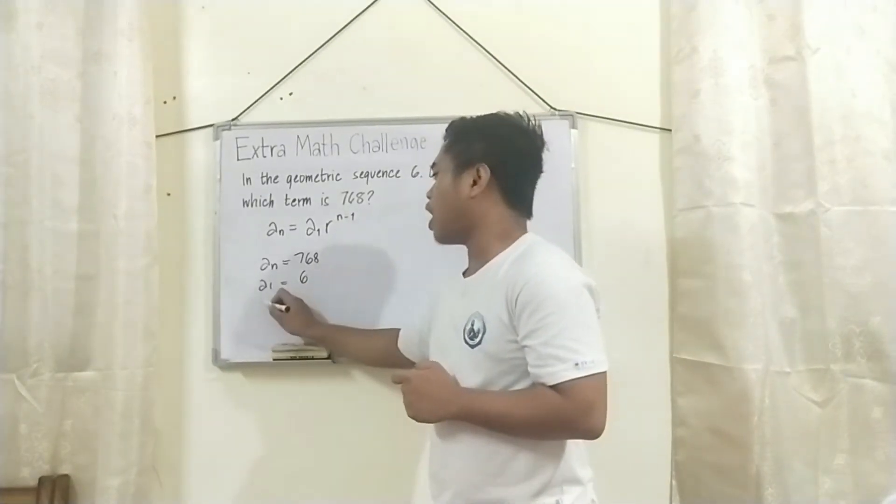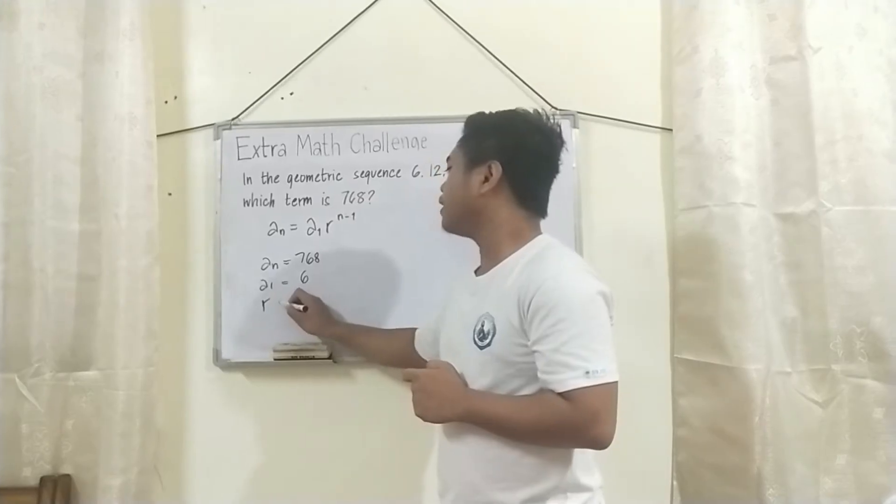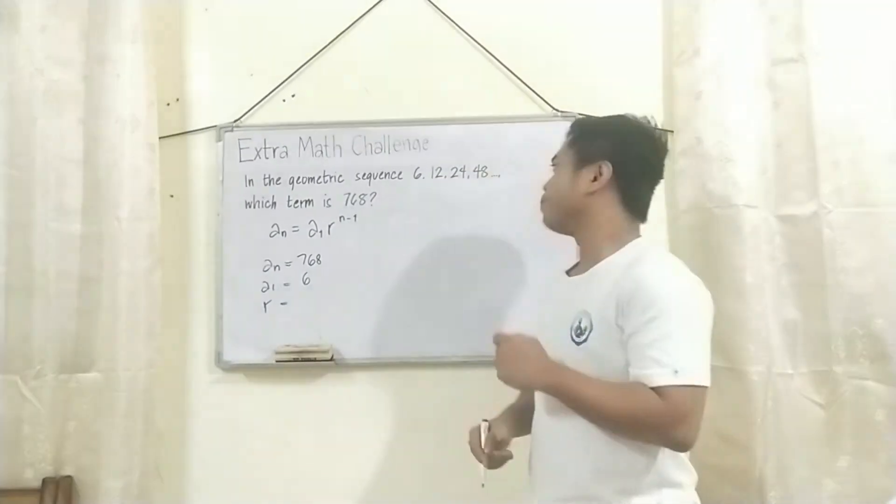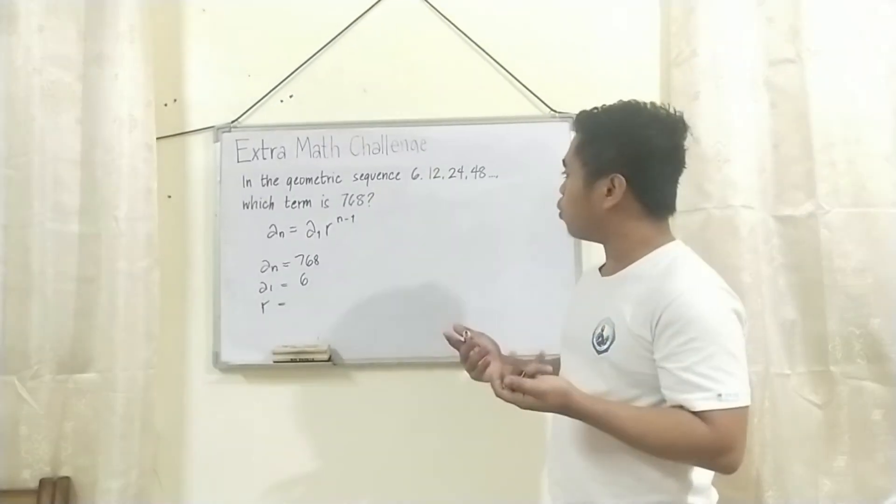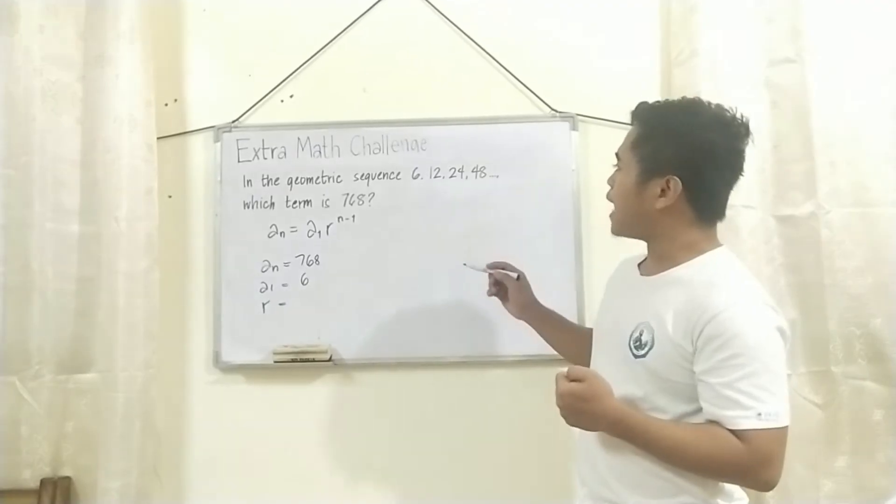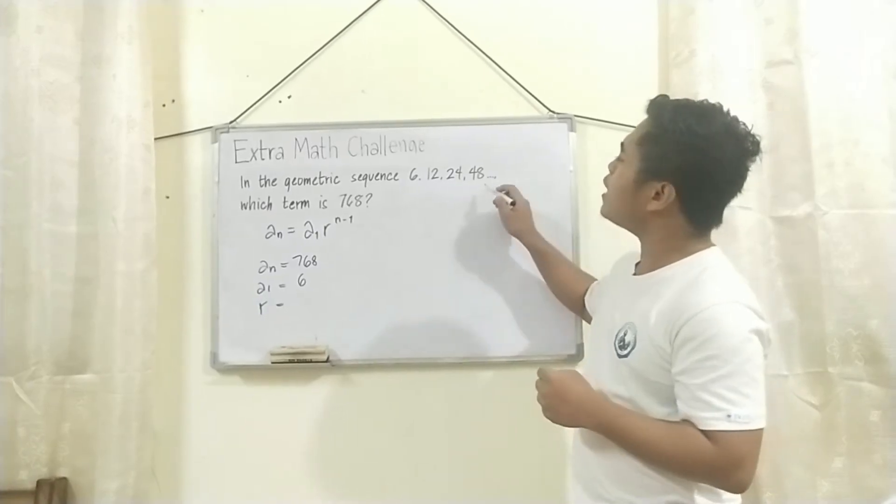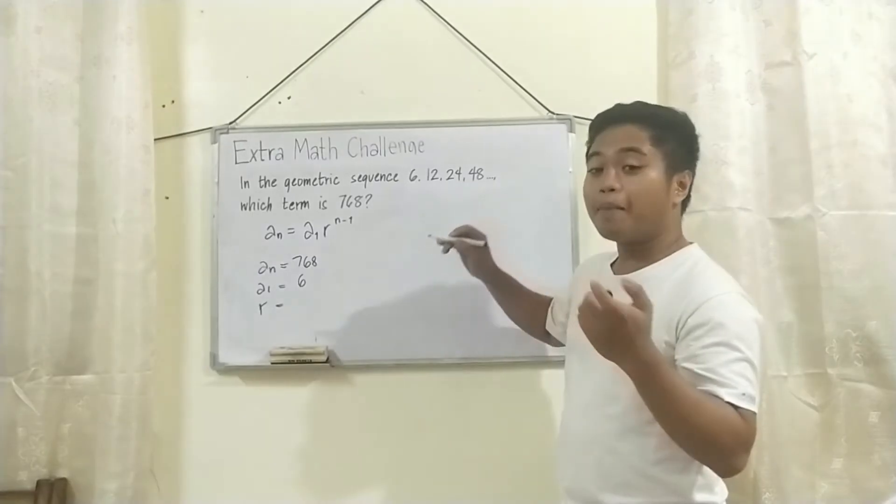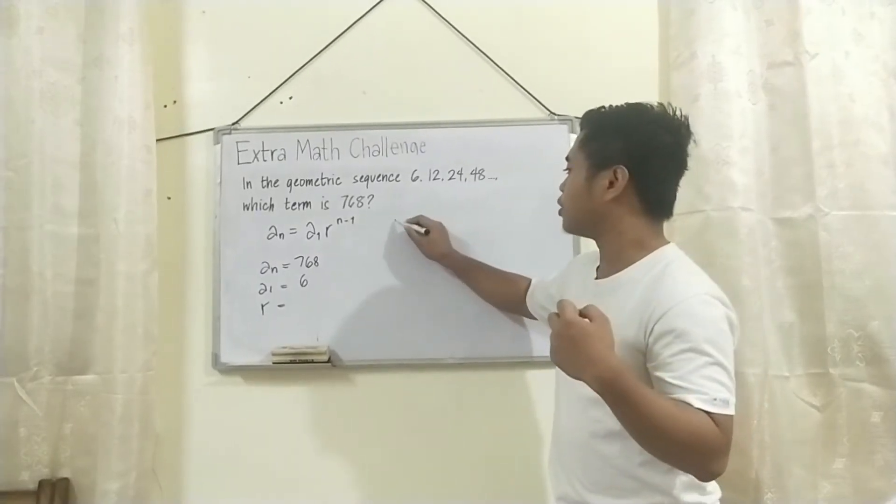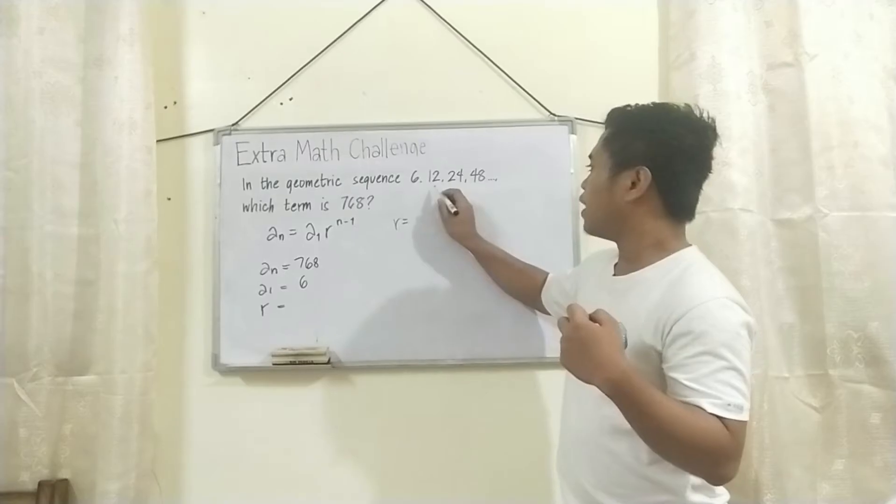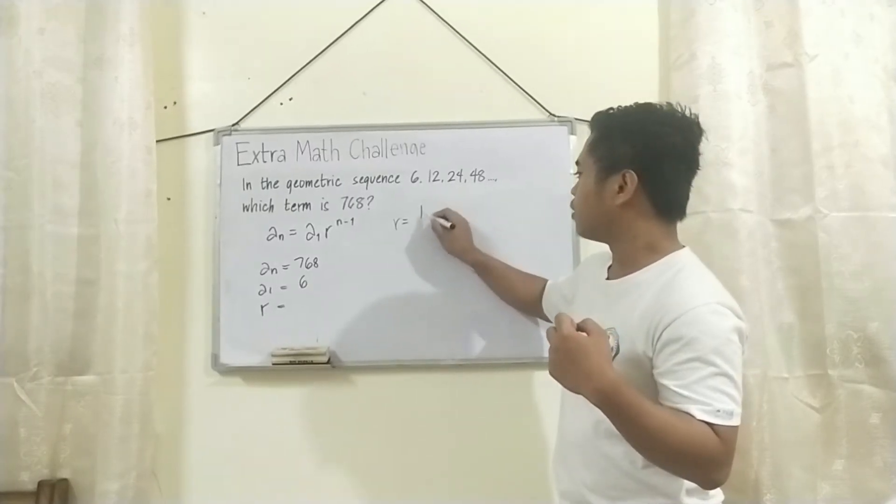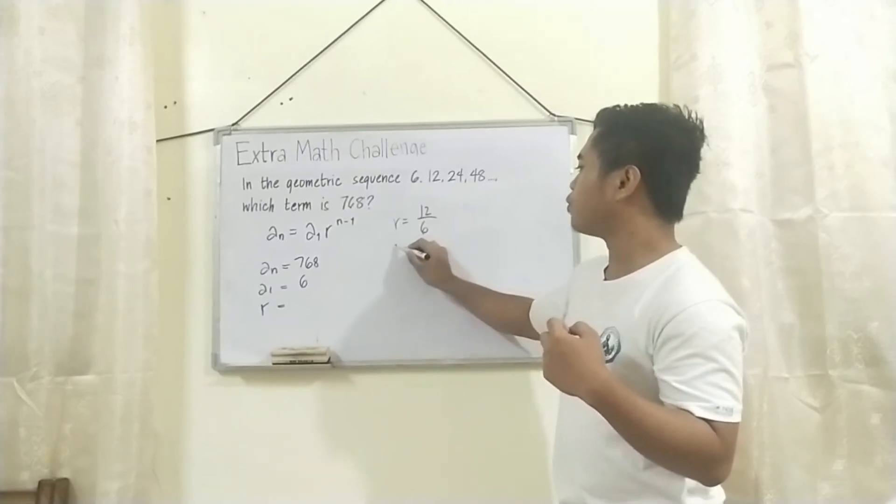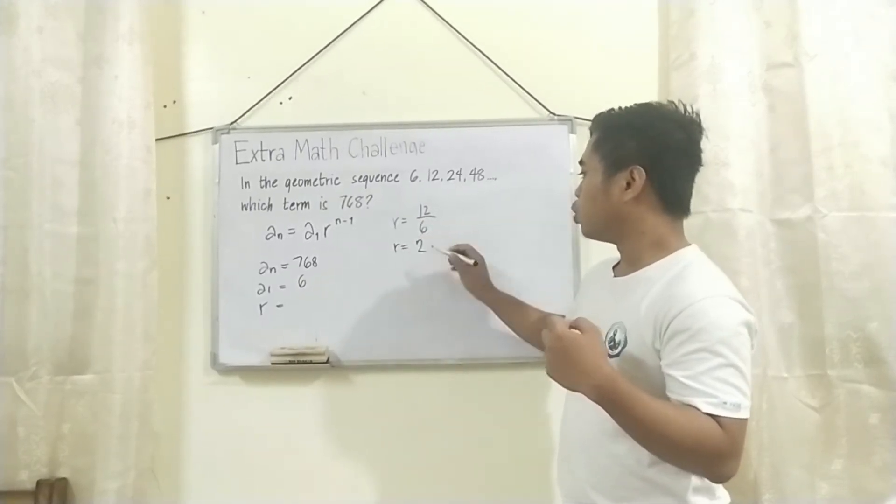How about R? Yung R naman, yan yung tinatawag na common ratio. How to know or identify the common ratio? We'll just divide any of these elements to its previous element. Para malaman natin yung common ratio niya. For example, we'll have the 12. We'll divide it by 6. Therefore, yung ratio niya is 2.